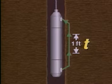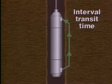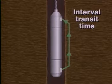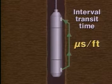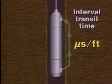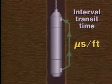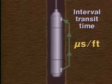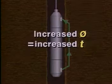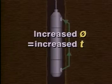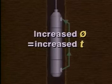In the English system, one foot. Known as the interval transit time and presented in microseconds per foot, this value depends on the lithology and porosity of the formation. For a given formation, the interval transit time or slowness increases with increased porosity.